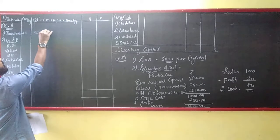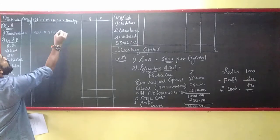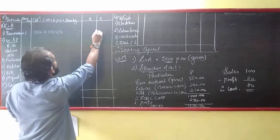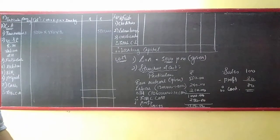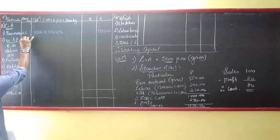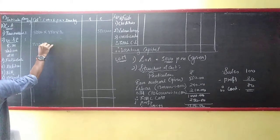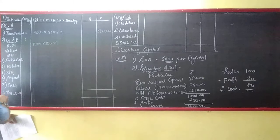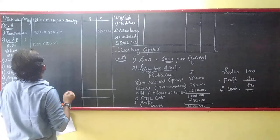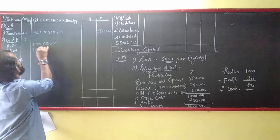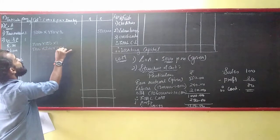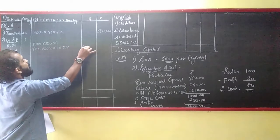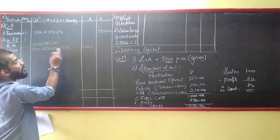For Work in Progress: activity level is 5,000 units, rate of material is ₹550. Processing stage is 1. So: 5,000 × ₹550 × 1 for material. For labour: 5,000 × ₹240 × 1, at 50% completion stage.